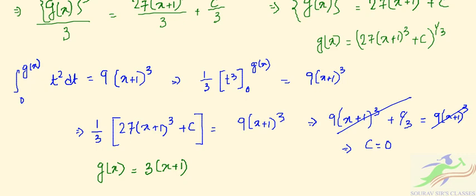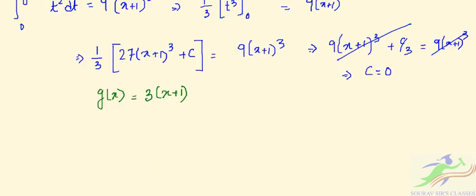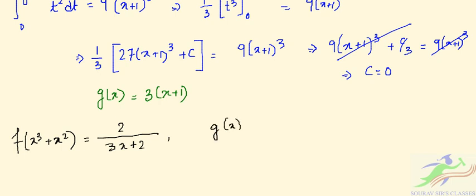So with C = 0, we have the two key results: f(x³+x²) = 2/(3x+2) and g(x) = 3x+1.